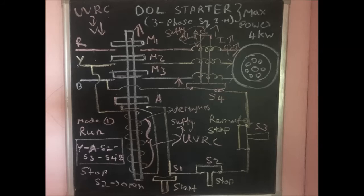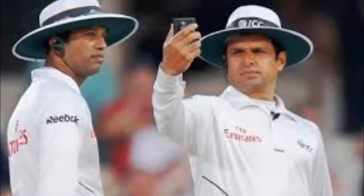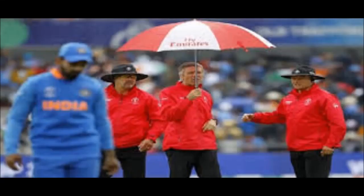For overload protection, when the motor is running and more load is applied, it draws more current. As current increases, magnetic power increases. A nearby iron rod moves upward, opening the S4 switch. Now the under-voltage release coil power supply is cut, the coil demagnetizes, M1, M2, M3 conductors go to their original open position, and the motor is safely disconnected.